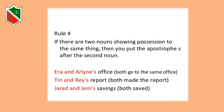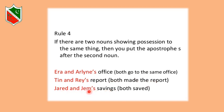Rule number four: if two nouns show possession of the same thing, put the apostrophe S after the second noun only. For example, Era and Erlin's office — both share the same office, so apostrophe goes after the second name, Erlin. Tin and Ray's report — both made the same report, so apostrophe after Ray. Jared and Jem's savings — apostrophe after Jem because it is the second name.